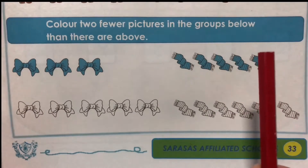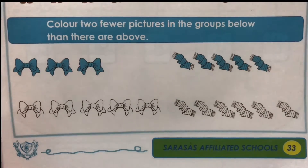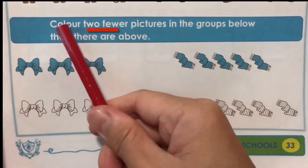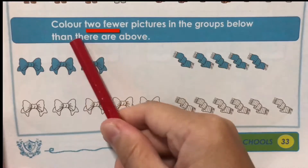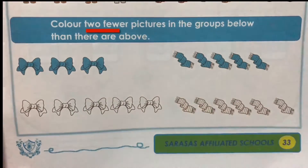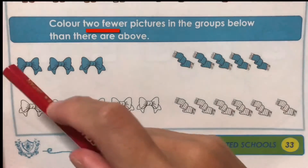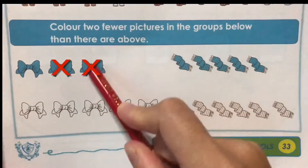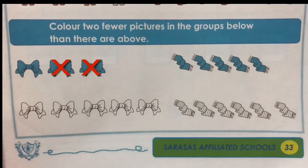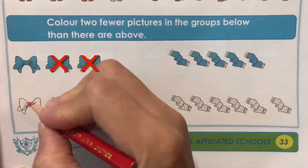You can choose any color you'd like to use. Let's read the instruction: Color two fewer pictures in the groups below than there are above. Let's count the bows above: 1, 2, 3. Less than two bows, there is one bow left. Mark one bow below: 1.